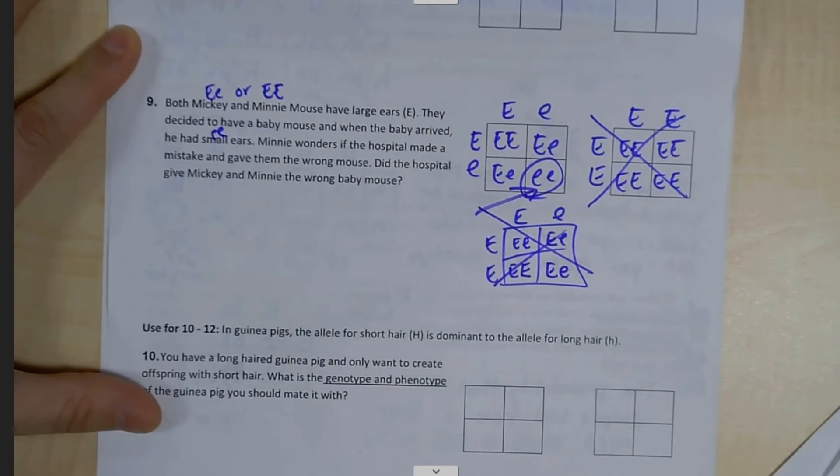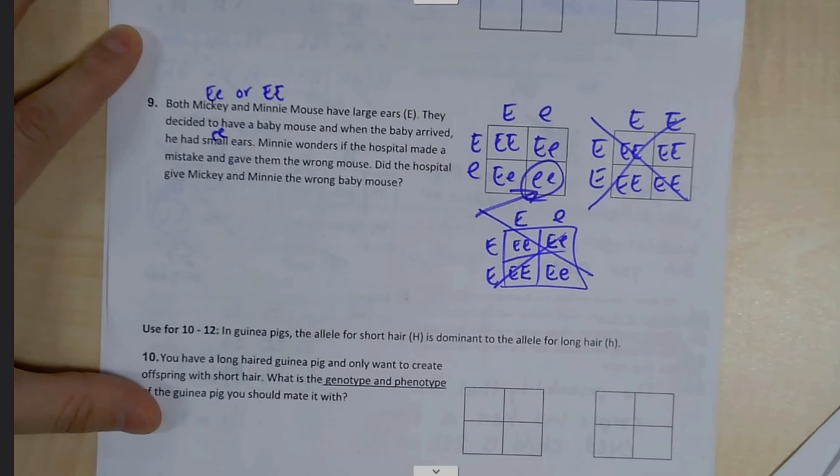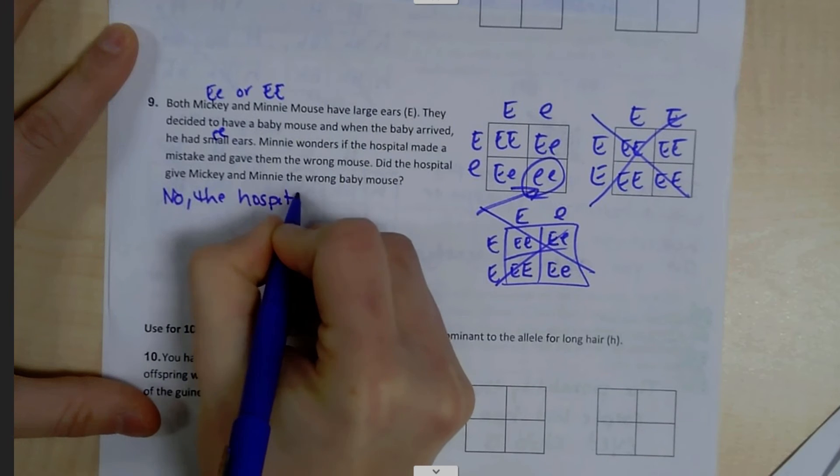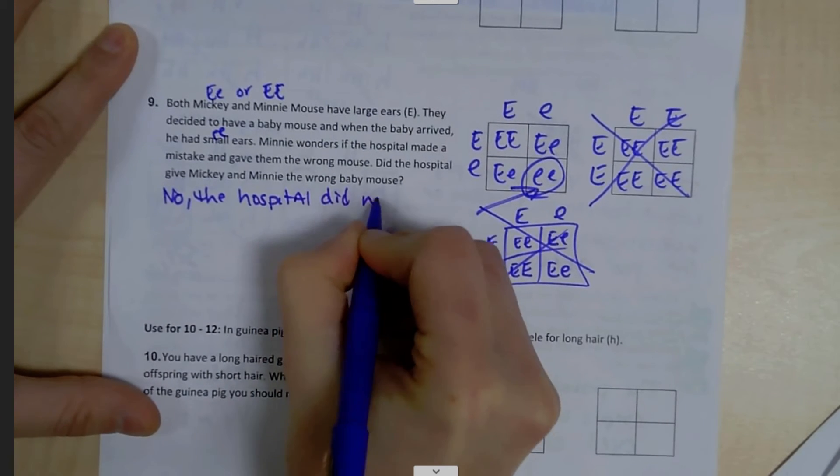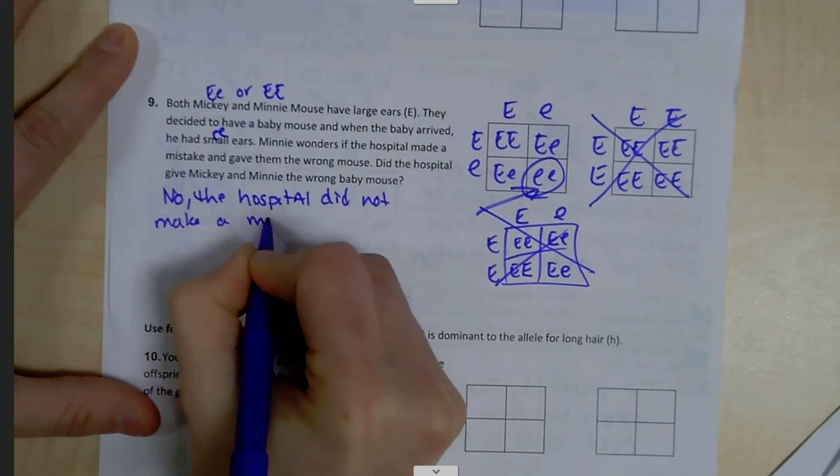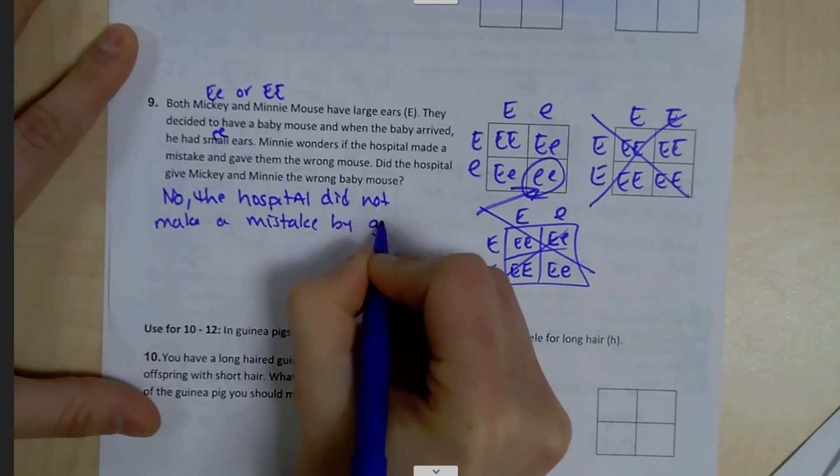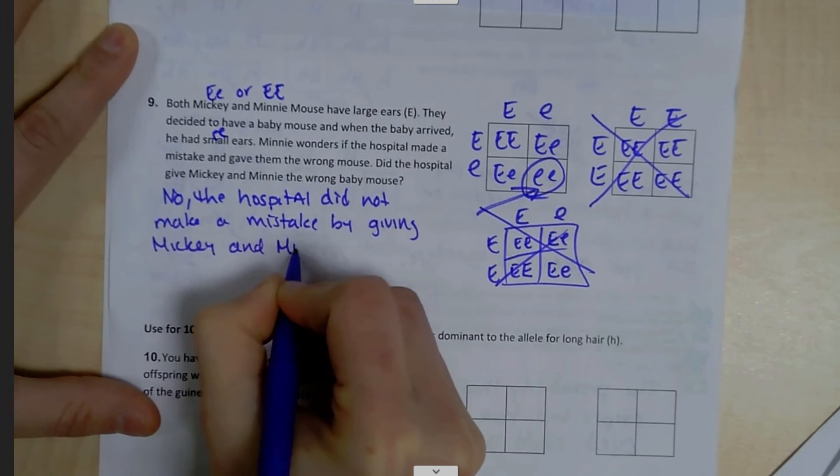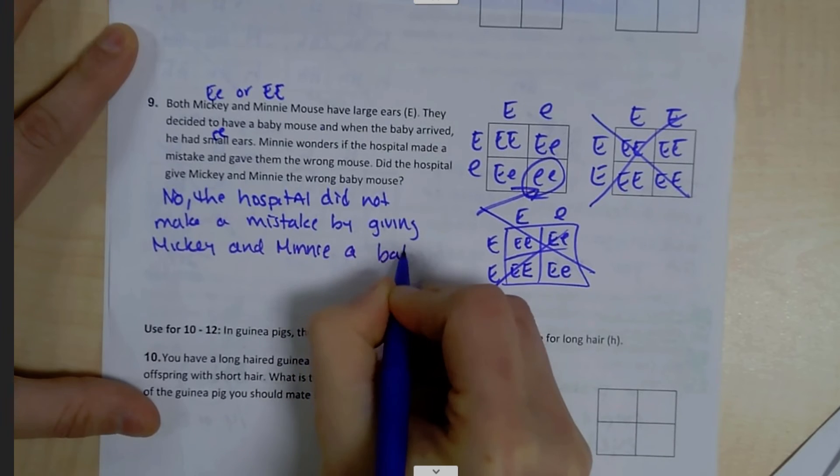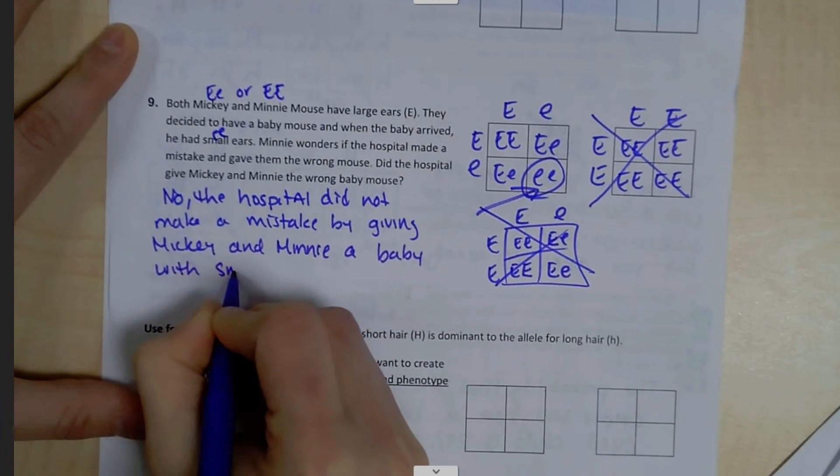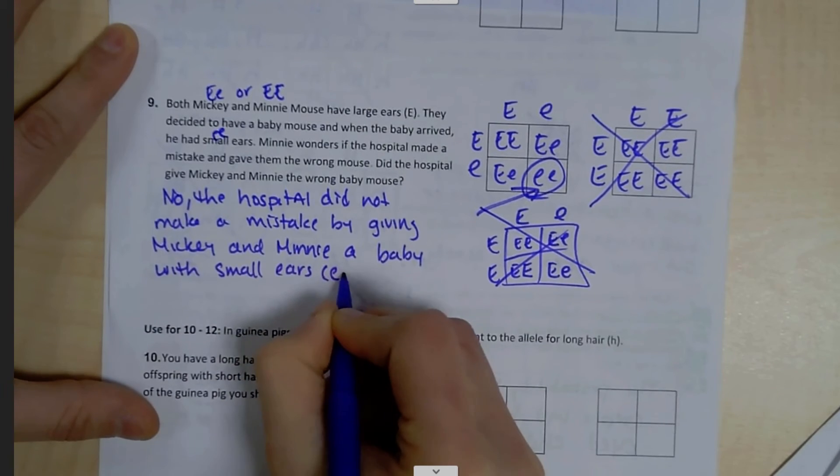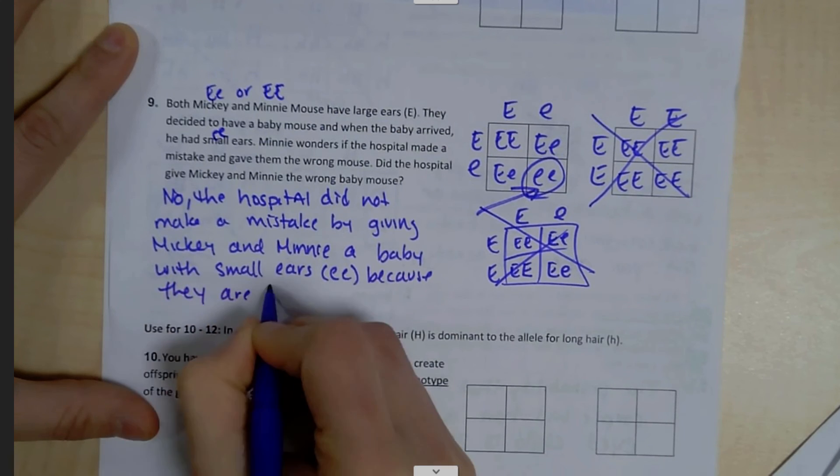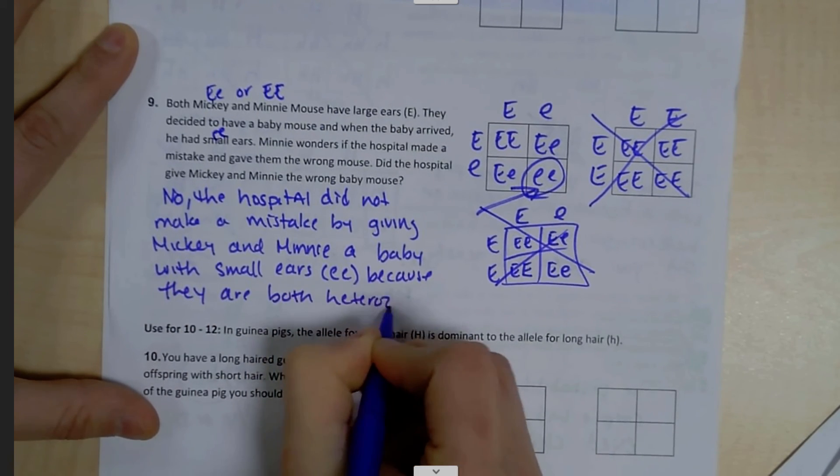So it is possible if both the parents are heterozygous. I'm going to write, no, the hospital did not make a mistake by giving Mickey and Minnie a baby with small ears, because they are both heterozygous.